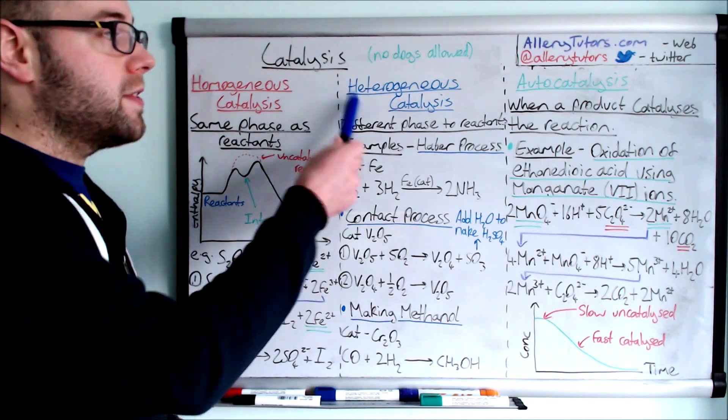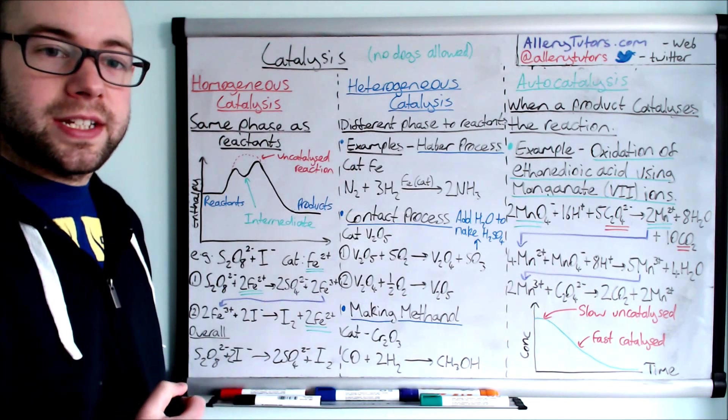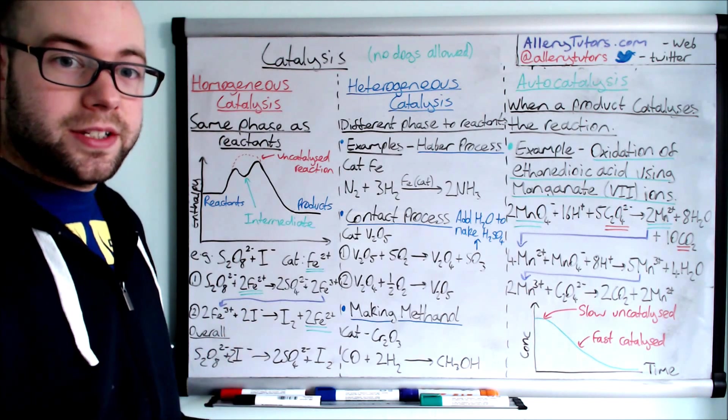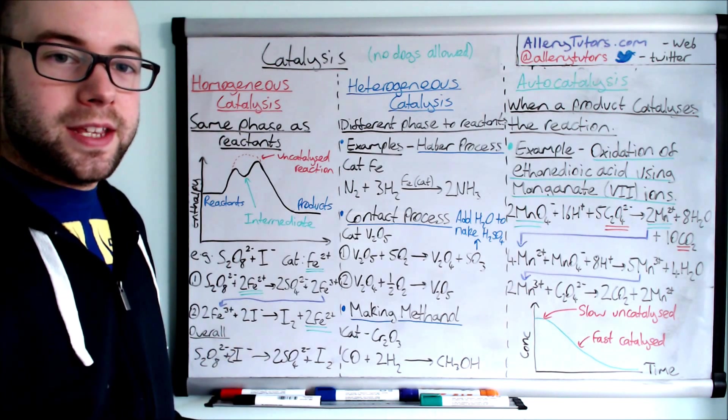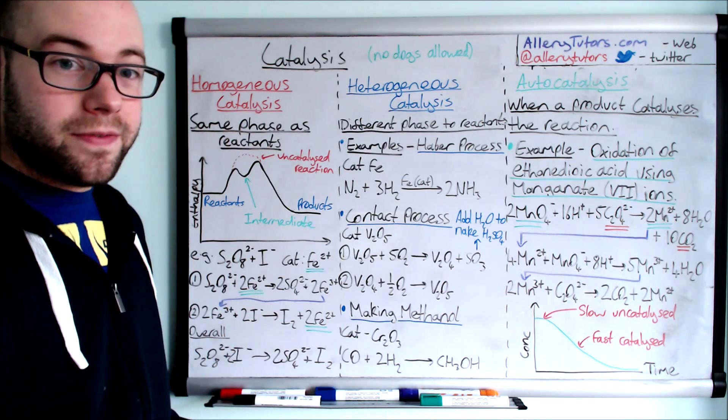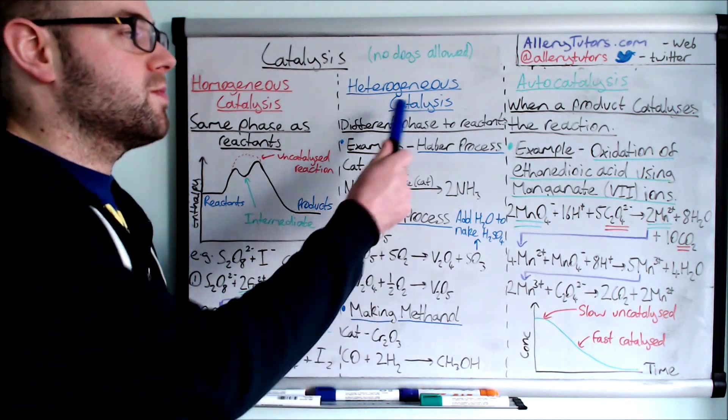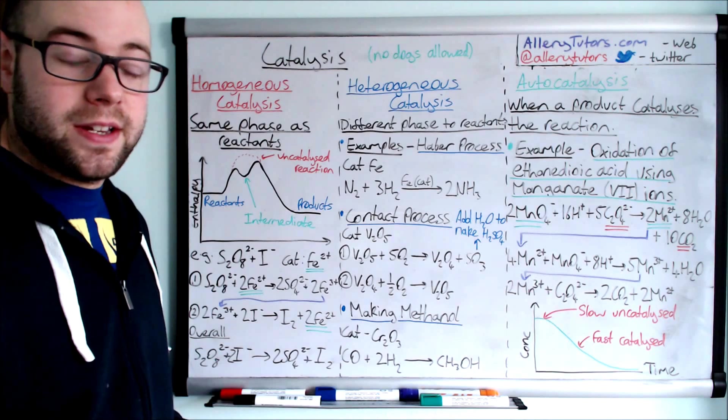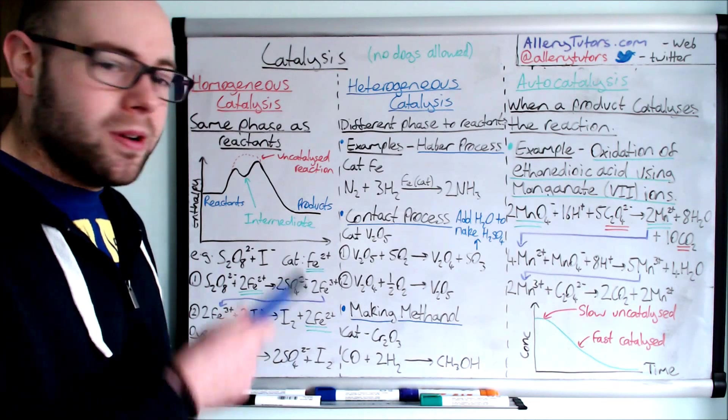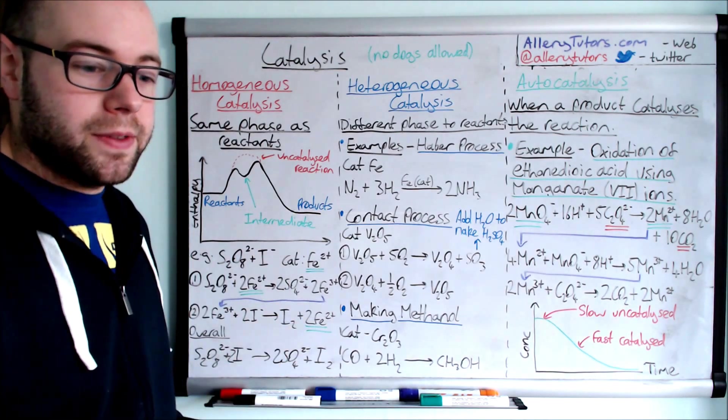Okay, so the next one is called a heterogeneous catalyst. A heterogeneous catalyst, as the name suggests, means that the reactants are in different phase to the catalyst. For example, you might have gas phase reactants and these will react with a solid phase catalyst. We're going to go through three examples here and show you how this works.